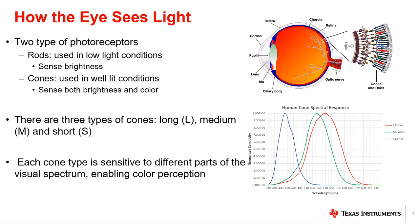The human eye not only differentiates light based on brightness, but also color. Of the two different types of photoreceptors, called rods and cones, rods are typically used in low light conditions and can only sense the brightness of light. Cones are typically used in well lit conditions and sense both brightness and color.